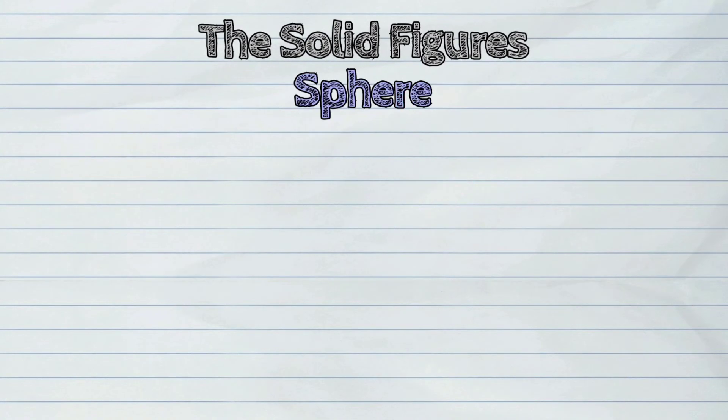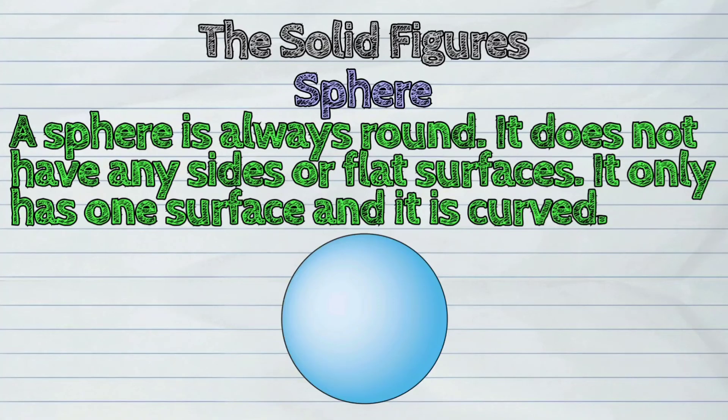And the sphere. A sphere is always round. It doesn't have any sides or flat surfaces. It only has one surface and it is curved.